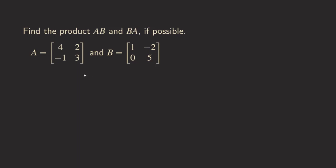Hello everyone. Today let's talk about matrix multiplication. We have two matrices here. A is a 2 by 2 matrix and we also have another 2 by 2 matrix here. This one is matrix B. We want to find the product AB and also the product BA, and we want to see whether it's possible and also whether they're the same. Now let's get started.